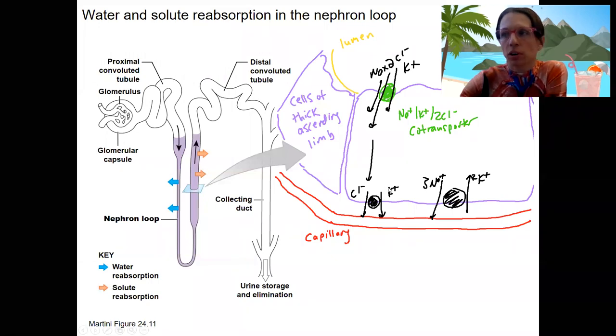This co-transporter, symport, same direction is passive transport. So it's not a pump, does not require ATP. You know that because we're going down our concentration gradients. Chloride moving out, potassium moving out, that's down our concentration gradients.